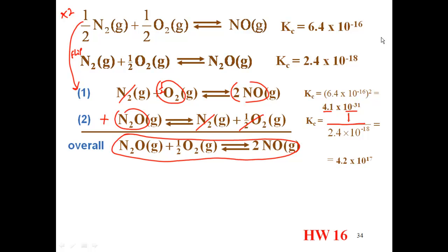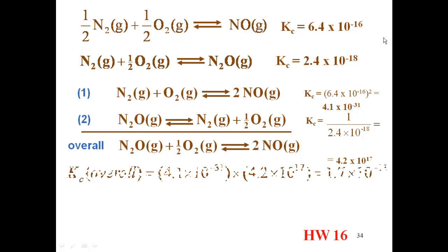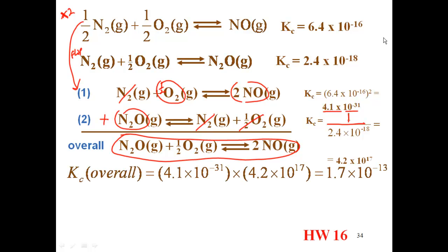That matches the target equation. Now I multiply the K values together: K1 squared, which is 4.1 times 10 to the negative 31, times K2 reciprocal, which is 4.2 times 10 to the 17th, gives an overall K of 1.7 times 10 to the negative 13 — that's the K for the reaction in question.